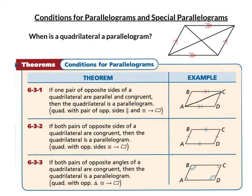Here are the things we can use to prove a quadrilateral is a parallelogram. First: if one pair of sides is both parallel and congruent — so BC and AD are congruent and BC and AD are parallel — then we know it's a parallelogram. Second: if both pairs of opposite sides are congruent, it's a parallelogram. If you draw in that diagonal, you have side-side-side in those two triangles. Third: if both pairs of opposite angles are congruent, then it's a parallelogram.